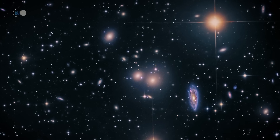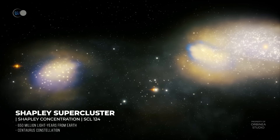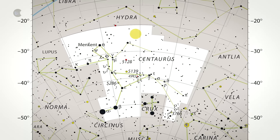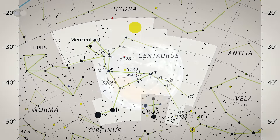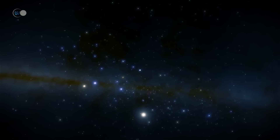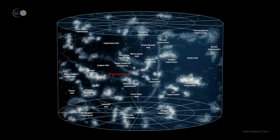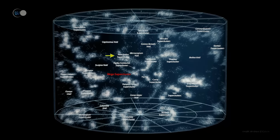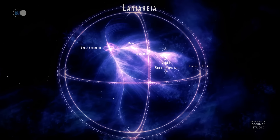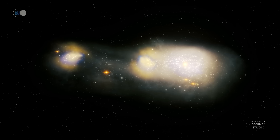Other known superclusters include the Shapley Supercluster, 650 million light years away in the Centaurus constellation — gigantic by any measure. Our little planet is in the Milky Way, which is in the Local Group, which is in the Virgo Supercluster. Along with the Hydra-Centaurus Supercluster and the Peacock-Indian Supercluster, the Virgo Supercluster is one of three superclusters in a larger structure called Laniakea. Beyond Laniakea is the Shapley Supercluster — an even larger supercluster to which Laniakea is attracted.